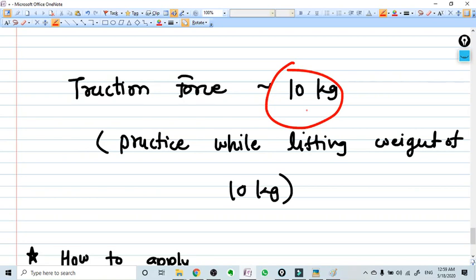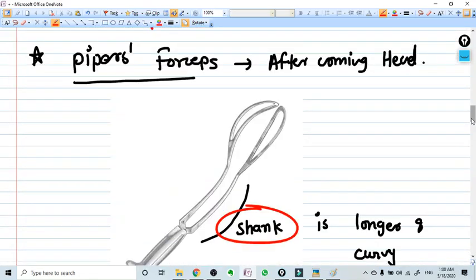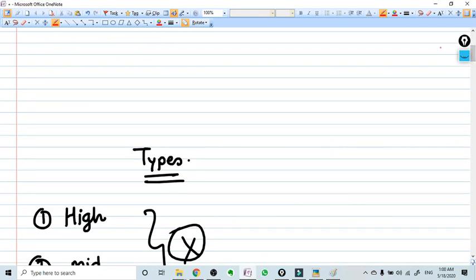The very important thing that every time is missed is how much the traction force should be applied. What is the maximum traction force? You cannot give the traction of the forceps too much. Just 10 kg or maximum 15 kg force you can apply to take the baby out from the pelvis. And how you can measure this thing? You have to practice this thing with 10 or 15 kg of the weight every day. Now how to apply, we have a separate video. Kindly go through that. Thank you for listening.